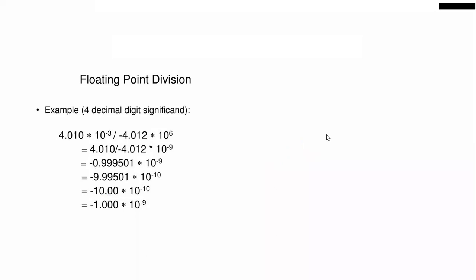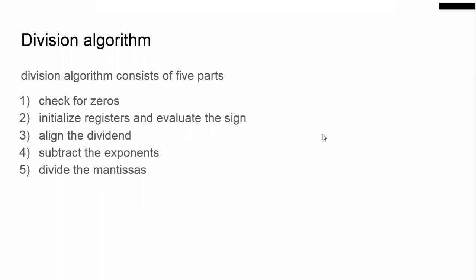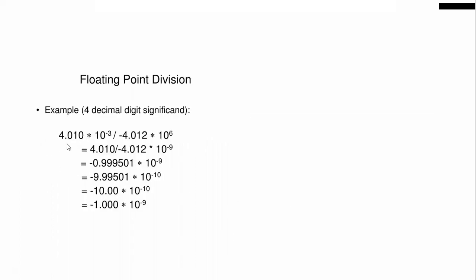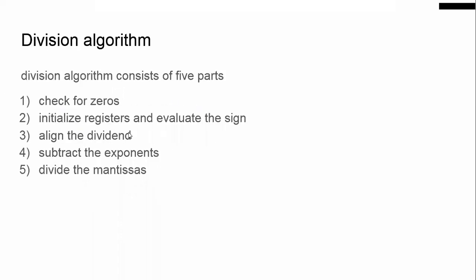Now we will see the division algorithm. It mainly consists of five parts. One is: first check for zero. We have to check the mantissas of X and Y, whether they are equal to zero or not. If any one of them is zero, then you cannot proceed — you have to stop. So that is the first step: check for zeros.